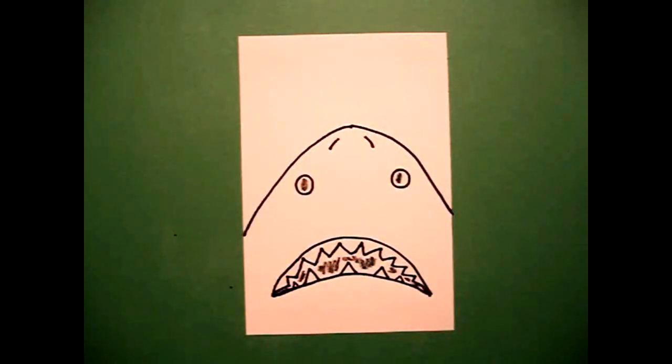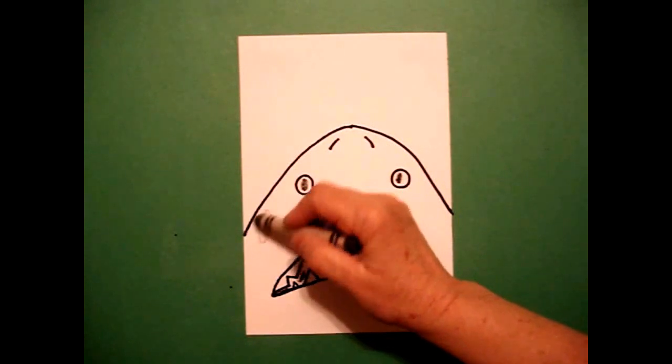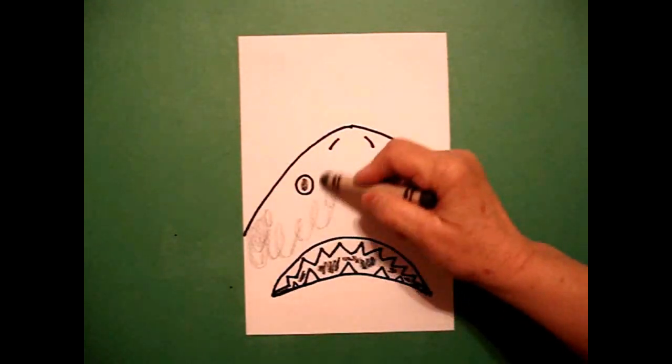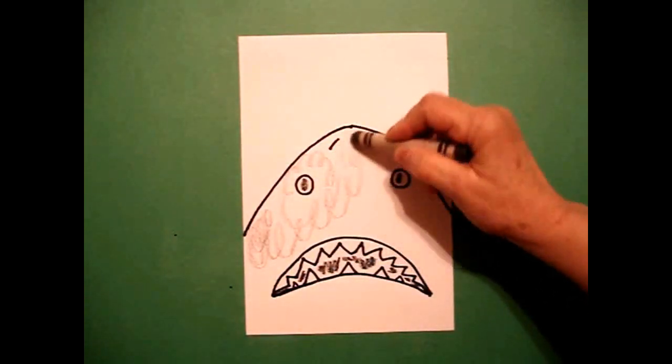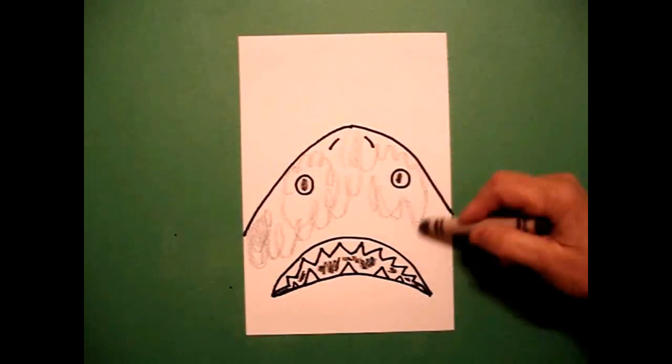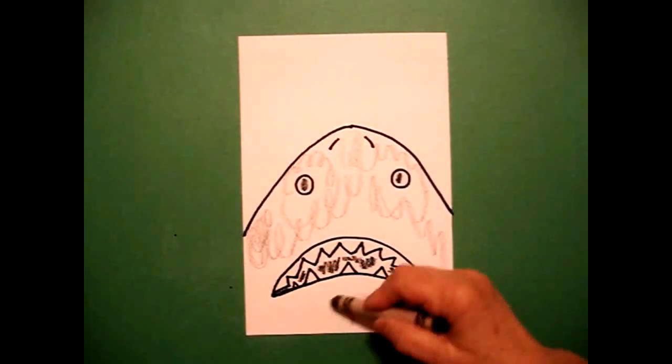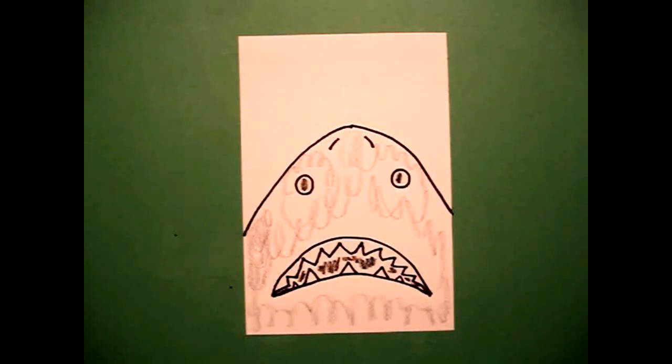The last color you're going to do, if you've got one, is gray. You're going to do gray crayon all the way up, over, down, and below. Let's see what he looks like all colored in.